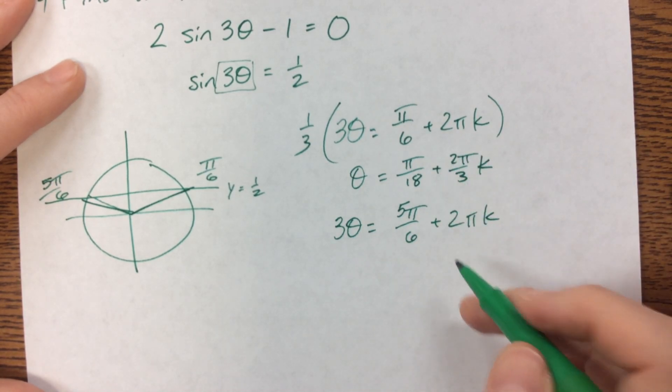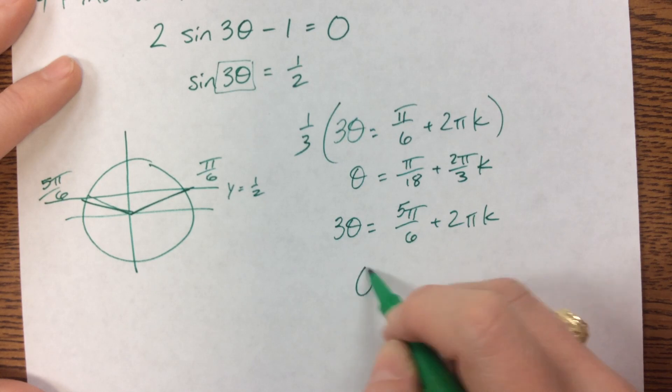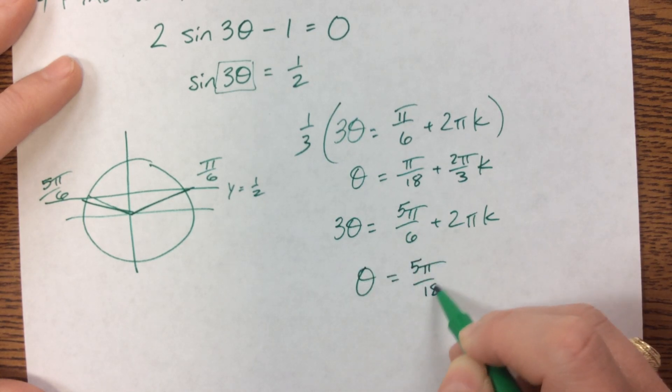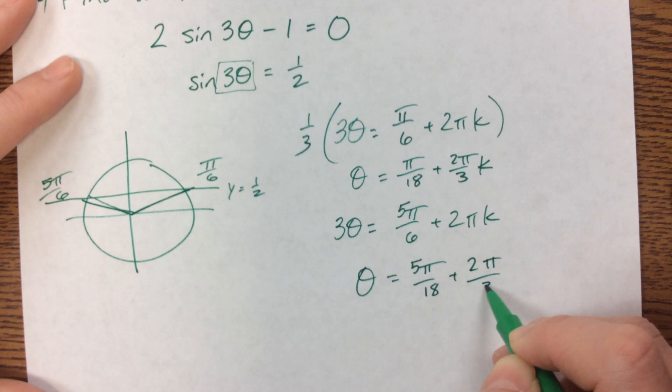So this would give me theta is equal to pi over 18 plus 2 pi over 3 times k. You can put the k on top if you want. That's fine. And then we also have theta is equal to 5 pi over 18 plus 2 pi over 3 k.